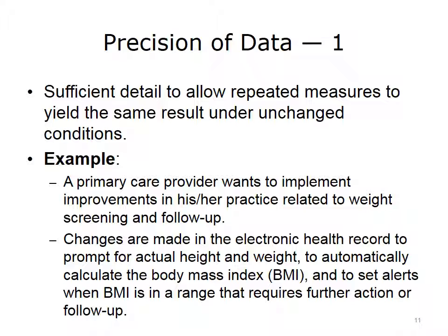Precision refers to the degree to which repeated measures yield the same result under unchanged conditions. Precision or reproducibility is essential in order to allow for valid comparisons. Quality and precision means that the data values should be large enough to contain just enough detail to serve the intended purposes. Note that precision is not intended to be applied only to quantitative data; it can also refer to the descriptive terms used to represent qualitative data.